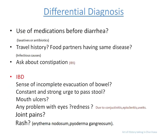This is the time for differential diagnosis. Start by asking: is there any history of use of medications before the diarrhea? Laxatives or antibiotics could be the cause of loose motions in this case. Ask the patient if there is any history of travel, and ask about food partners having the same disease, which occurs in infectious diarrhea. Also ask about constipation alternating with diarrhea, which occurs in IBS.